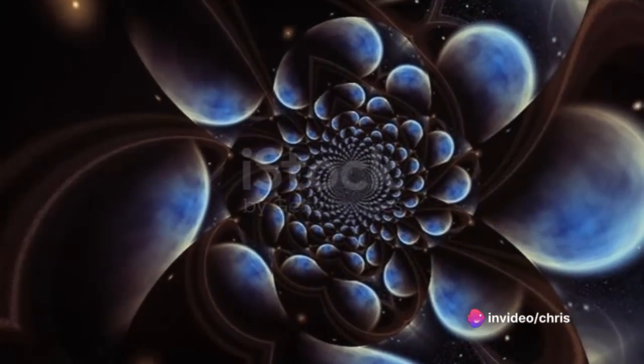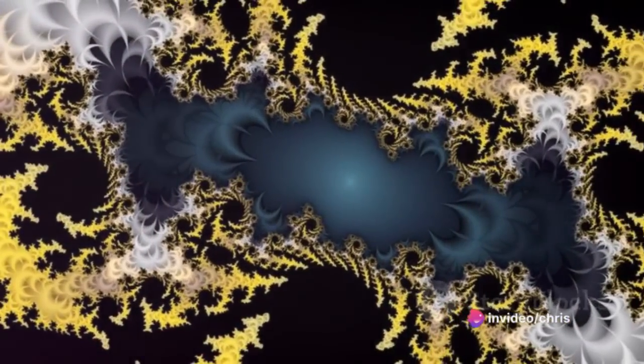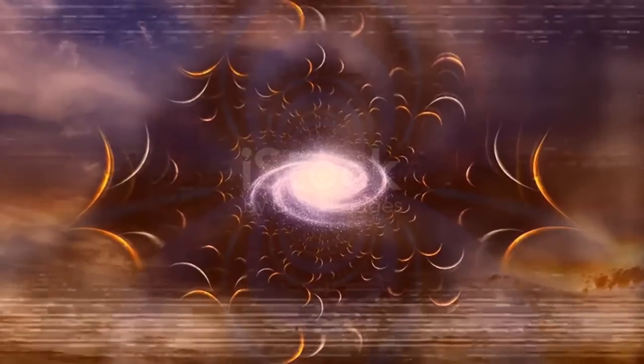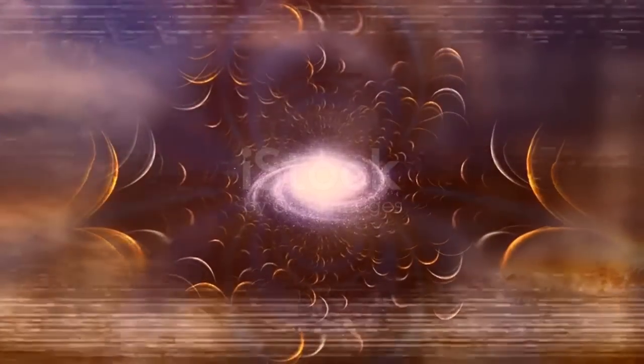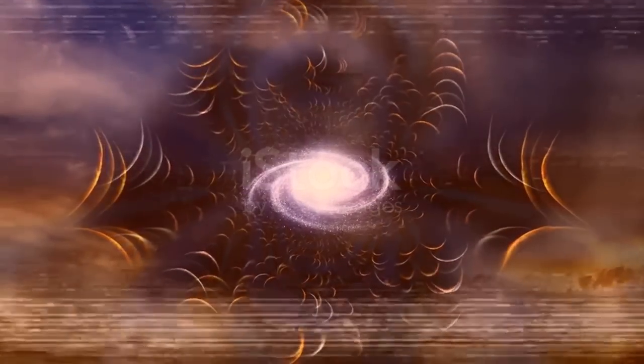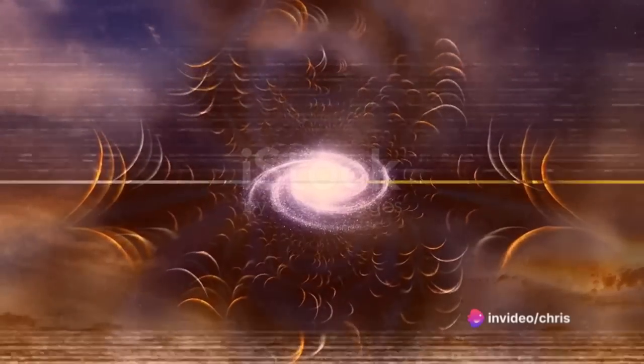In mathematical terms, the complexity of a fractal is expressed through its fractal dimension. A line has a fractal dimension of 1, a plane carries a fractal dimension of 2, and a space-filling fractal holds a lofty dimension of 3.